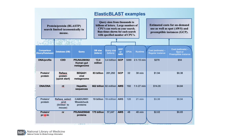And the last row is a blastp search — protein against protein — of NR with a moderately sized set of proteins, 57,000 residues. The total cost is only a few dollars and it took about 48 minutes to run. Take a look at the rest of the columns and cells here.